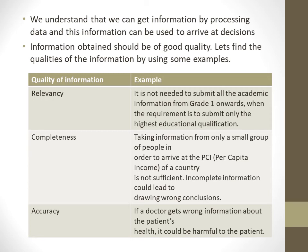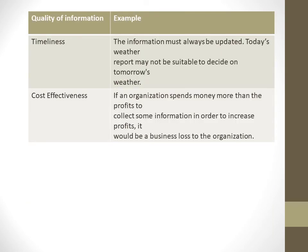The third quality is accuracy. Accuracy means the information given should be very accurate. As an example, if a patient gives wrong information to a doctor about their health, the doctor will prescribe the wrong medicine, which would be harmful for the patient when taking those drugs.